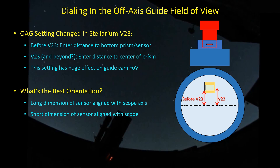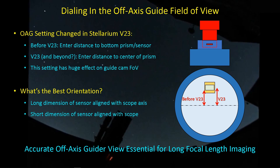Another thing I want to take on while we're here talking about off-axis guiders is the orientation of the camera within the off-axis guider. Stellarium can represent two different fields of view: one with the long axis of the sensor aligned with the axis of the telescope, and the other with the short axis aligned. For those of us using large focal length systems and looking at targets with very few guide stars available, having an accurate off-axis guider view is essential if you want to do some pre-planning and have high confidence that a guide star is going to be visible for that particular target on that particular night.